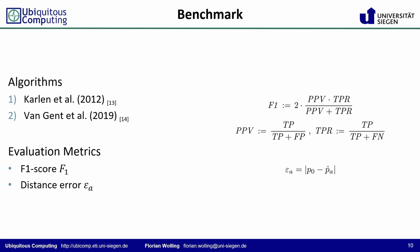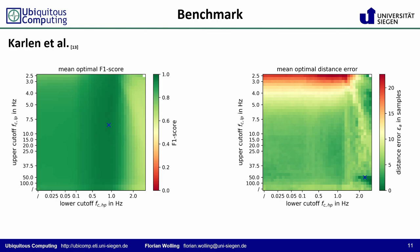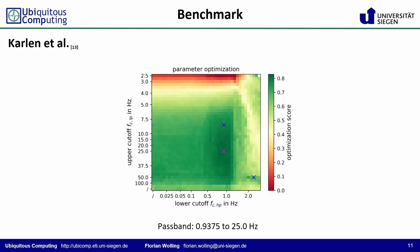To evaluate the effect of filtering on algorithm performance, we apply two popular algorithms to the pre-processed time series: the algorithm by Carlin et al. from 2012, and the recent algorithm by von Gendt from 2019. To benchmark their performance, we use the two metrics F1 score and distance error. For Carlin's algorithm, the F1 score on the left and the distance error on the right show a relatively smooth and homogeneous plateau, with local optima marked with a blue cross. The multiplication of the two normed metrics allows finding a trade-off, and the optimum is located at the pink cross.